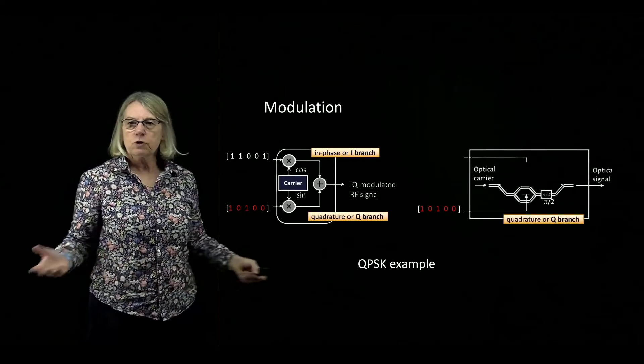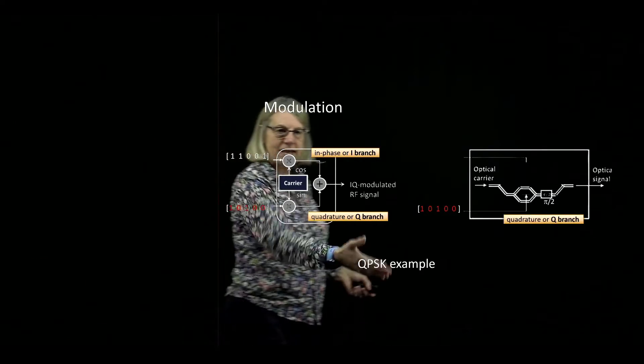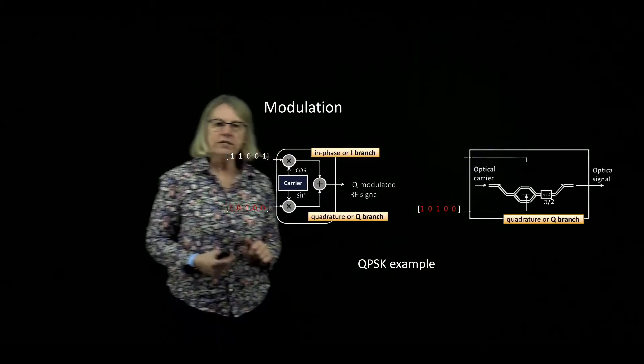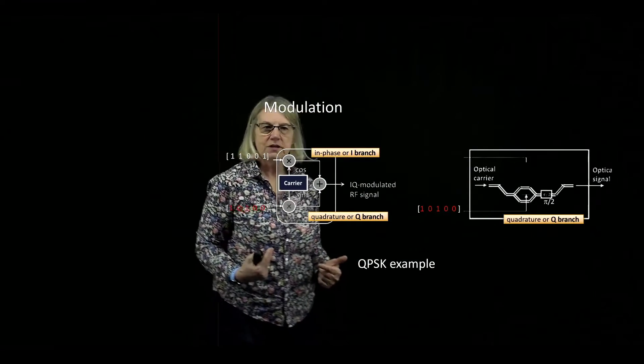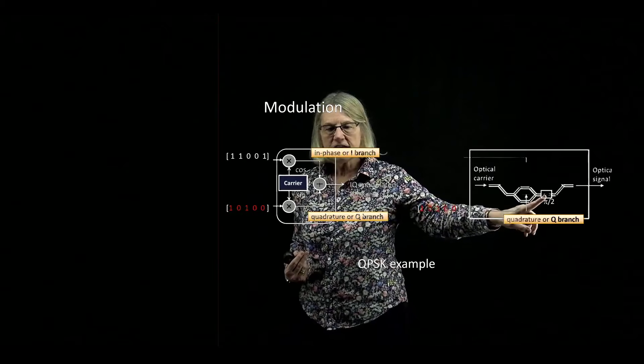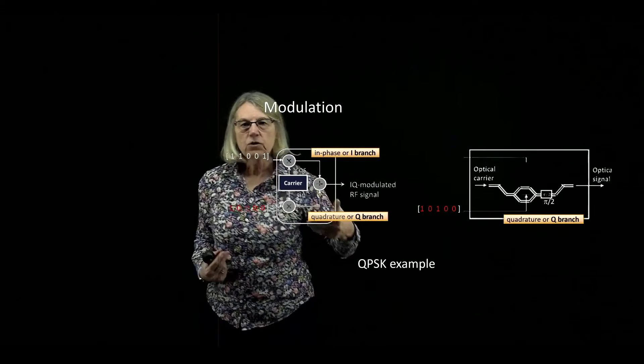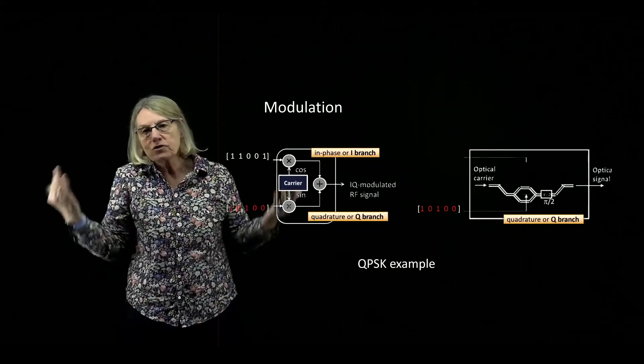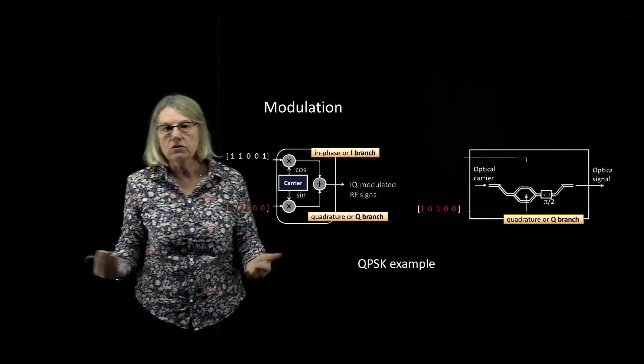Now what do I do for the QPSK example? Well it pretty much looks the same. The only difference is I'm going to introduce a phase shift in one of the arms in order to turn this, what was a cosine, into a sine. In other words, to make them orthogonal to one another.